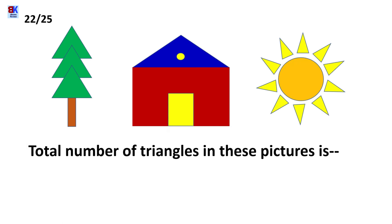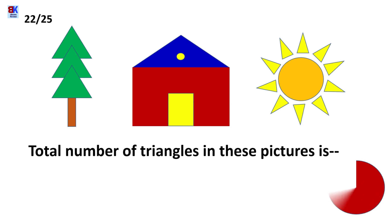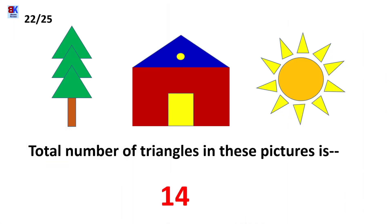Twenty-second question: the total number of triangles in these pictures is — ? The answer is 14: 3 triangles in the tree, 1 in the house, and 10 triangles in the sun. That gives a total of 14 triangles in all the pictures. Quick counting was what you had to do — were you able to get it correct?